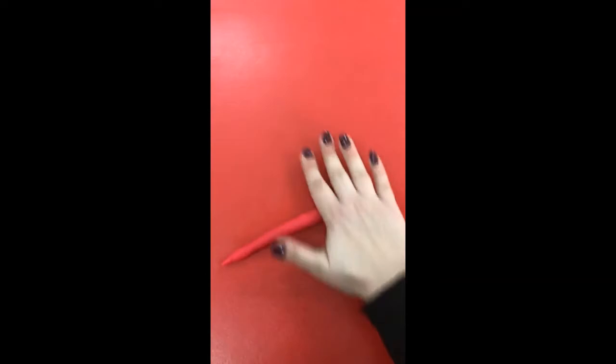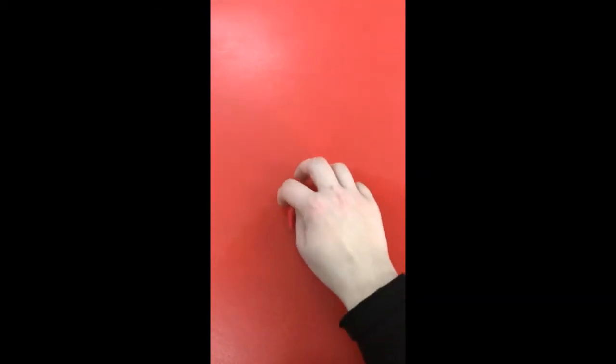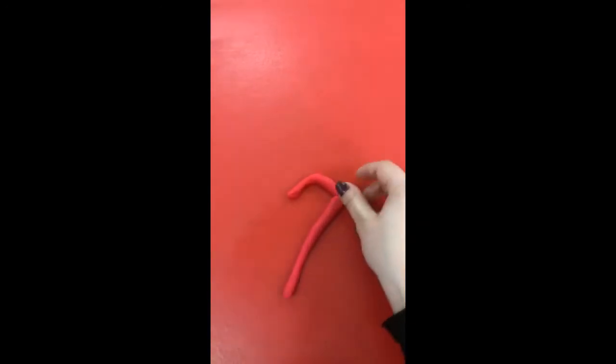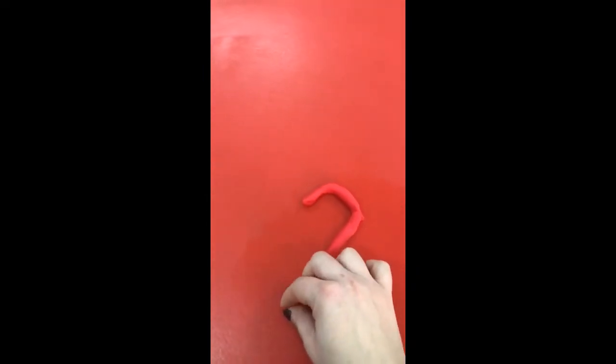One more time. Just enjoy playing with the Play-Doh. Roll. And round it. Round. Okay, take the other piece. Slide it. Slide. And then the last piece. Put it across.